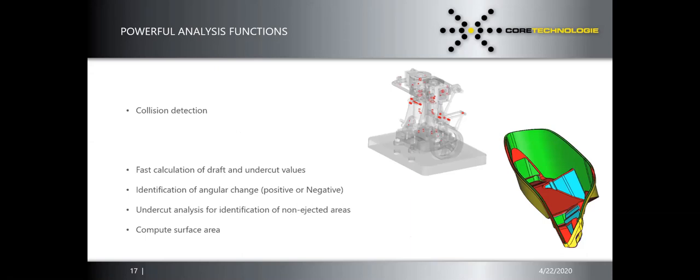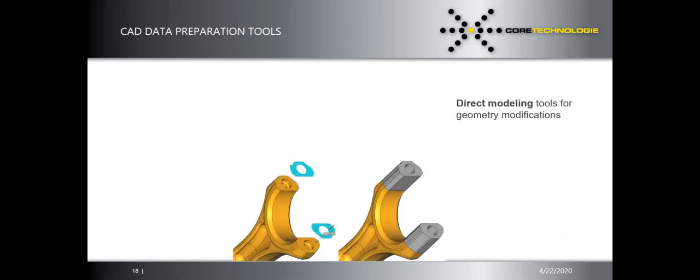Collision detection and draft analysis are available as analysis tools. Collision detection tells you where parts will collide when printed, and draft analysis identifies the angle change — positive or negative — for draft angle assessment. These may not all be shown in today's demo.